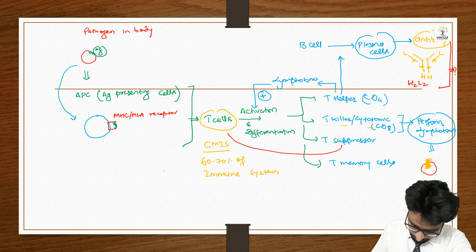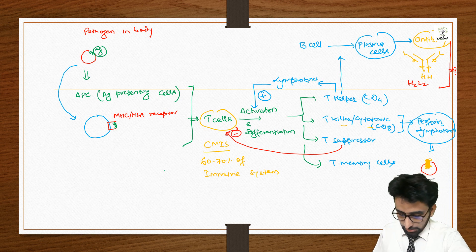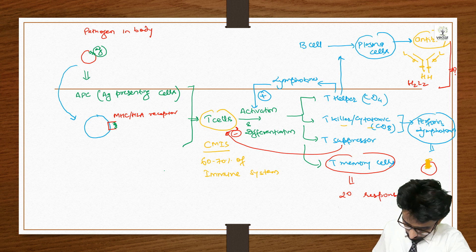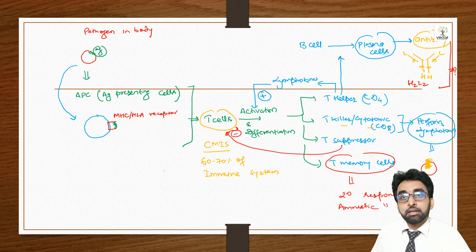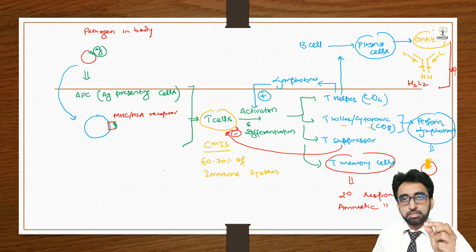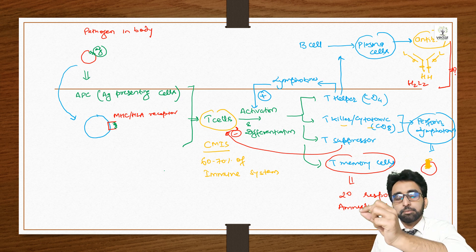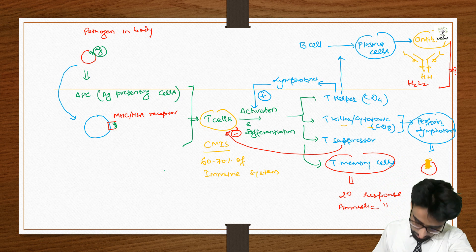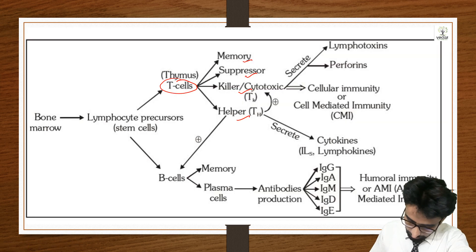Suppressor cells will suppress this immune activation — they control the differentiation and activation process. Memory cells are responsible for the secondary response and anamnestic response. As you saw in the last lecture, the primary response is weak and slow, but once memory cells are formed, the secondary response will be strong and fast — this is also the basis of vaccination and immunization.